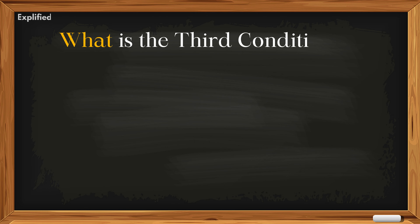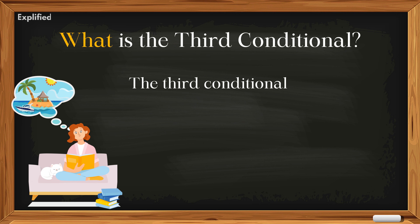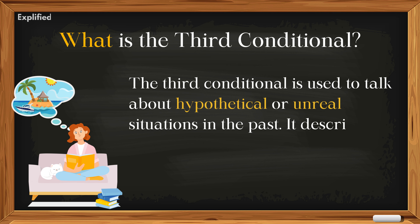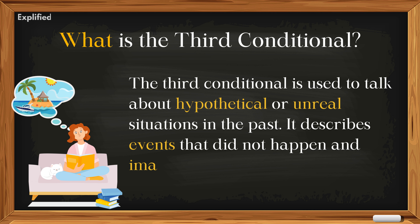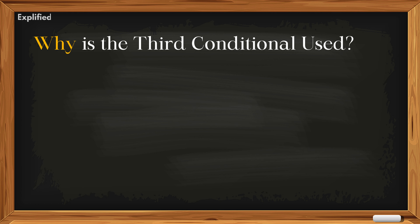What is the third conditional? The third conditional is used to talk about hypothetical or unreal situations in the past. It describes events that did not happen and imagines the possible outcomes if they had. Why is the third conditional used?